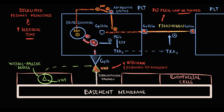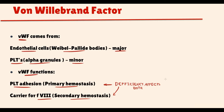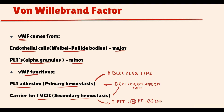Platelet count in von Willebrand disease will remain normal. There is nothing wrong with the platelets themselves — the reason they are incapable of making a platelet plug is the absence of von Willebrand factor; platelets simply cannot bind to the site of injury. So von Willebrand disease manifests with prolongation of bleeding time and partial thromboplastin time, while prothrombin time and international normalized ratio remain normal.